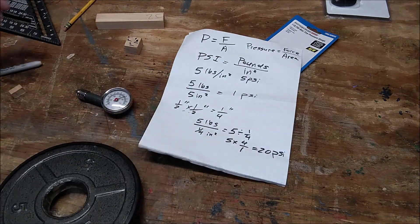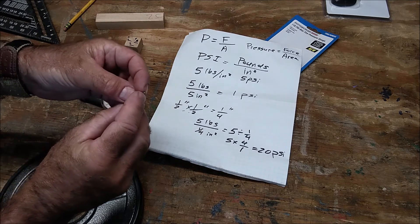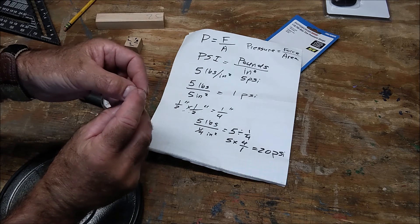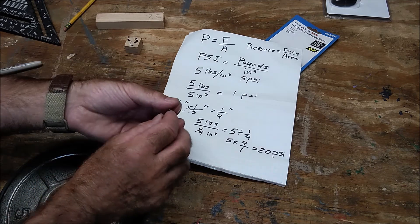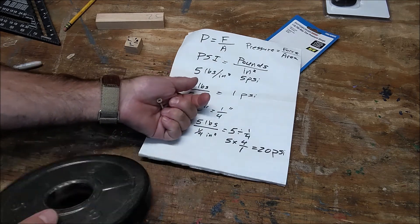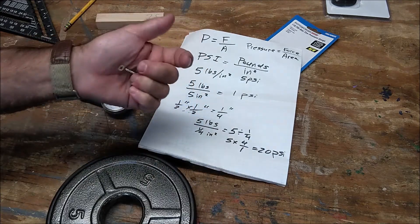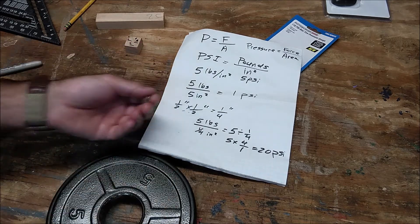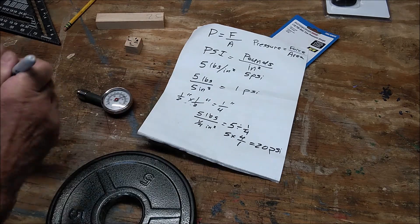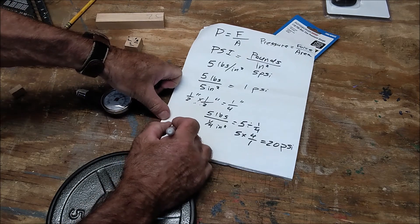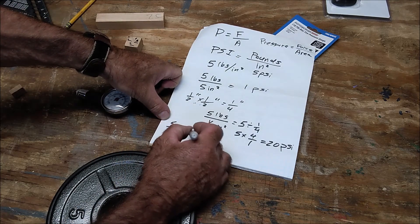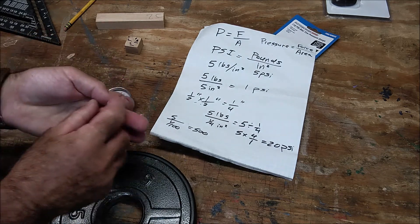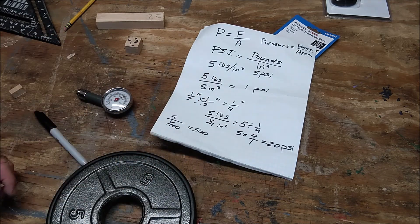Now imagine if I had a teeny little surface area like the tip of a screw you know that might only be one one hundredths of a square inch or even smaller than that. If I put that on my hand and put five pound weight on it right if that area was one one hundredths of an inch and a five pound weight five divided by one one hundredths would be five hundred psi probably enough pressure to put that screw into my hand so I'm certainly not going to try that.